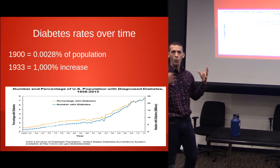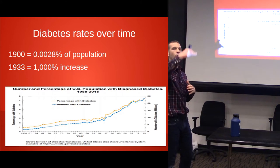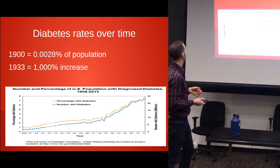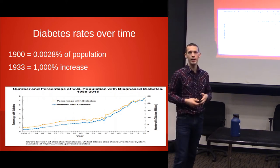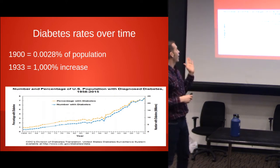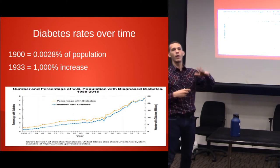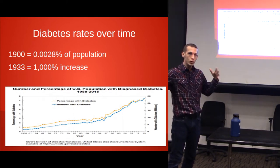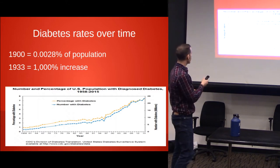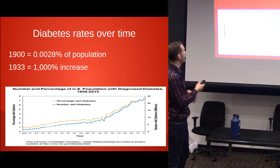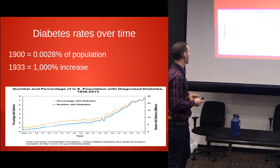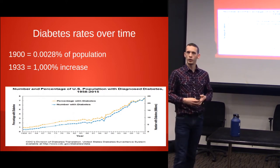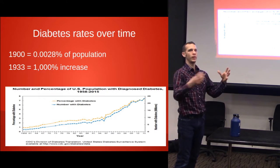Looking at the rates over time, it's become more and more prevalent. In 1900, 0.0028% of the population had it. In 1933, it had increased by 1,000% — a huge rise. From 1958 to 2015 we're looking at a continuously trending upward curve. As we talk about all the sources and causes of it, more of it starts to come out.